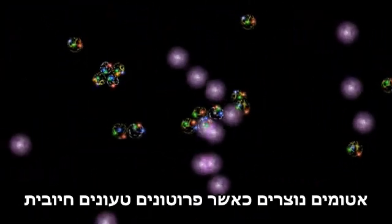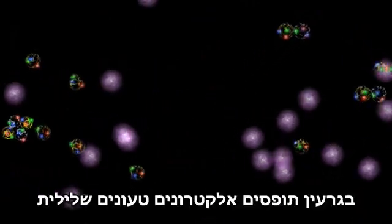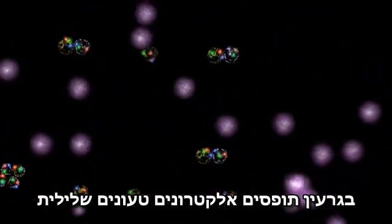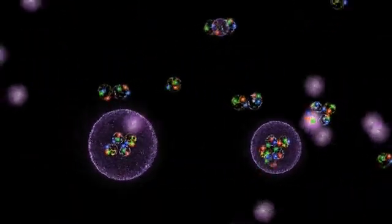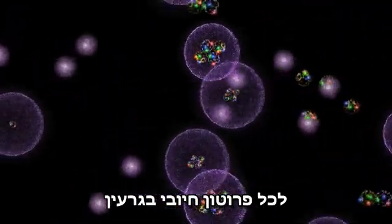Atoms are formed when the positively charged protons in the nucleus capture the negative electrons. Neutral atoms capture one negative electron for each positive proton in the nucleus.